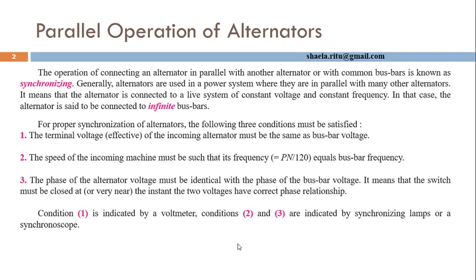The infinite bus imposes its own voltage and frequency upon any other generator that is connected to its terminals. So the grid's voltage and frequency is fixed if a generator is connected to an infinite bus.